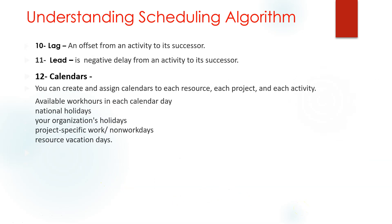Lag is an offset of an activity to its successor — it means waiting time. For example, you do excavation, wait two or three days, and then start placing your formwork. This is called lag. Lead is the opposite of lag; it is a negative lag, meaning you create concurrency between two activities.